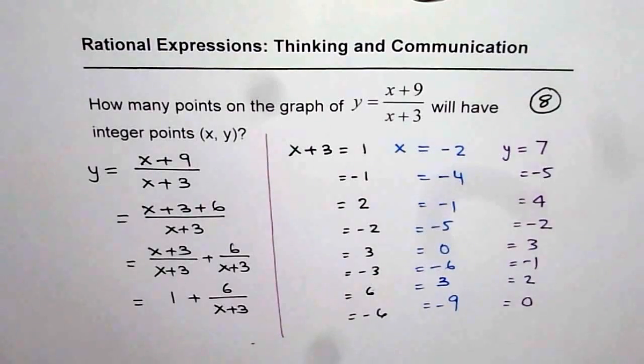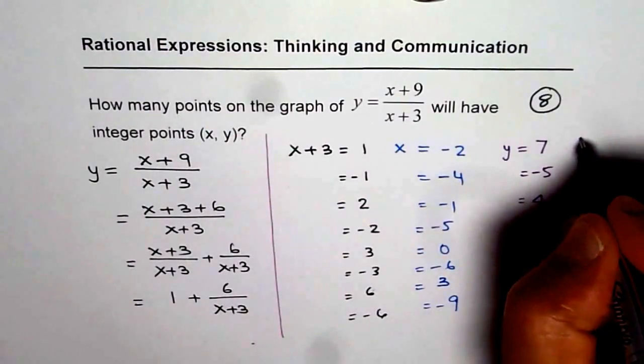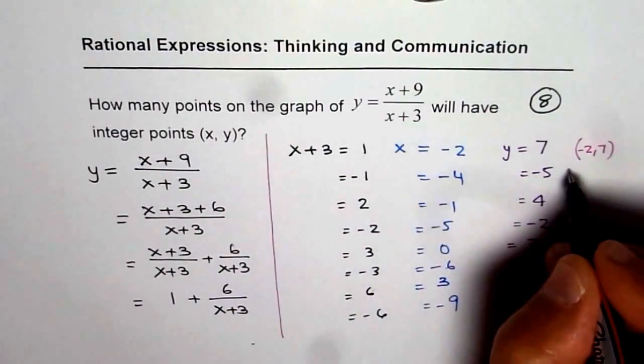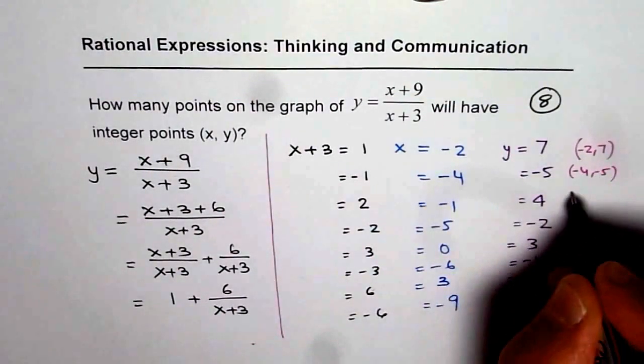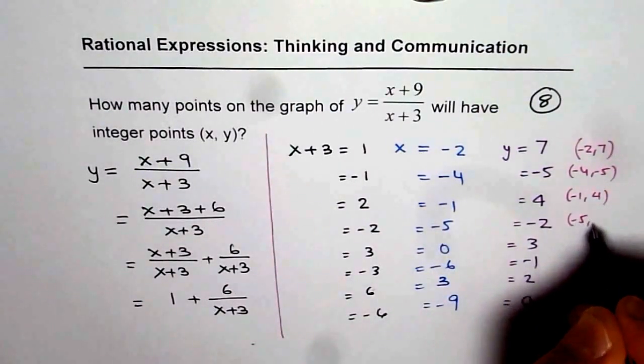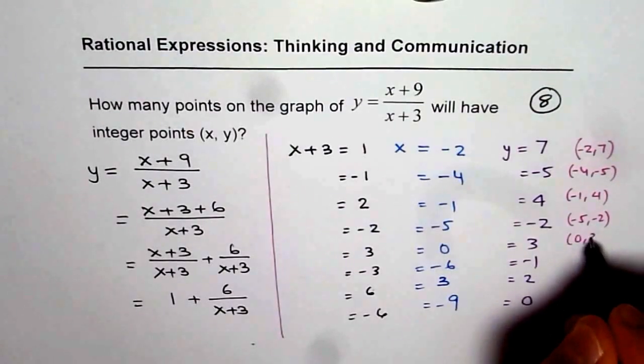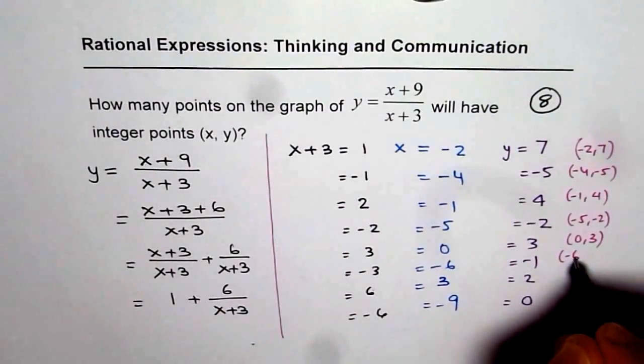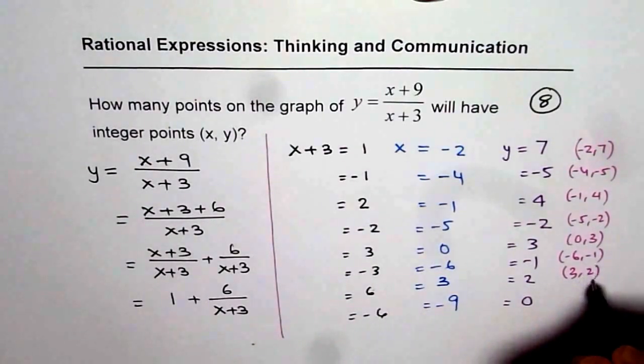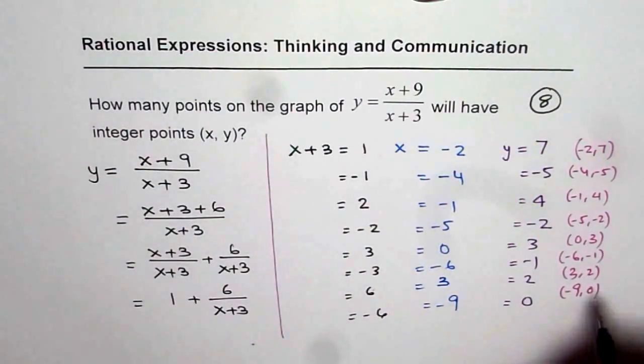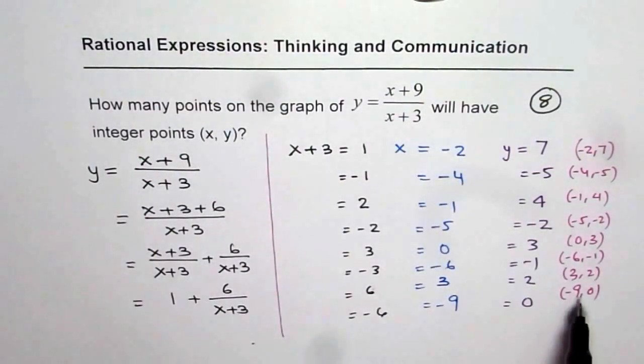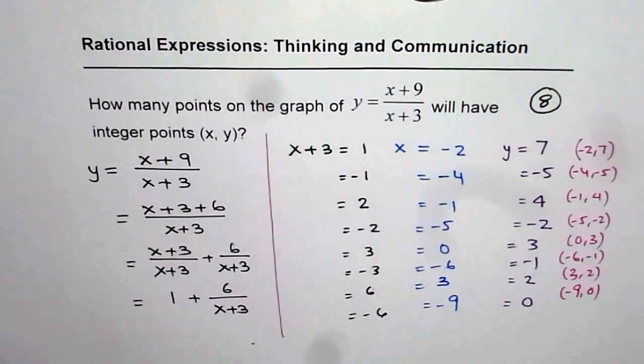So the points will be, let me write them in a different thing. So we will get these coordinate points: minus 2, 7, and then we have minus 4, minus 5, we have minus 1, 4, minus 5, minus 2, 0 and 3, minus 6, minus 1, 3 comma 2, or minus 9, 0. Let's check, minus 9 plus 9 is 0, so that will give you 0. So like this we can get.